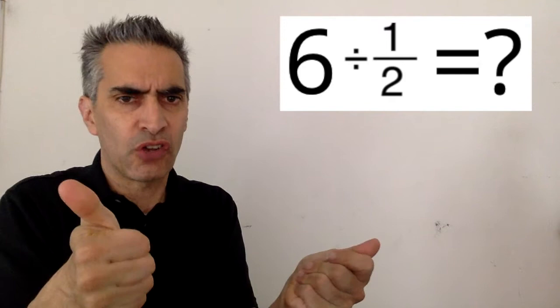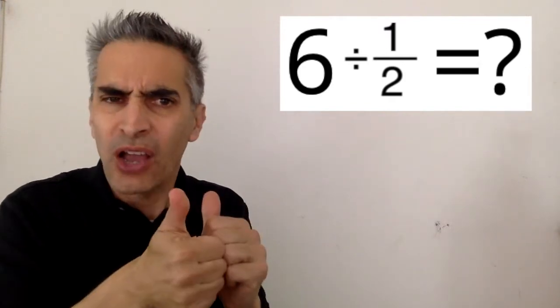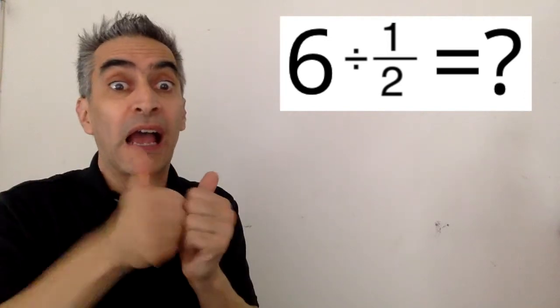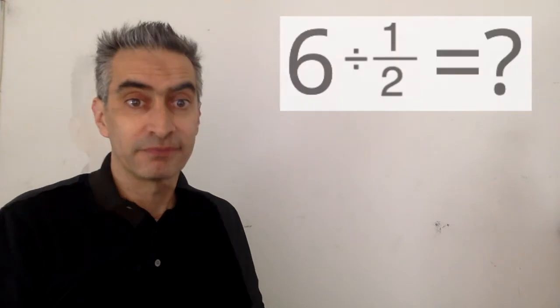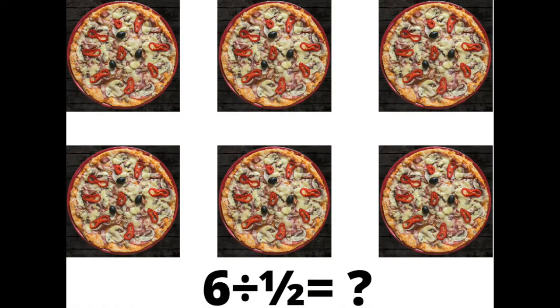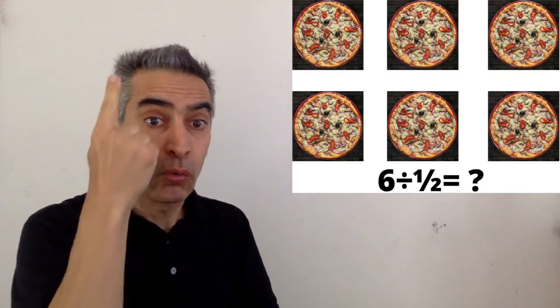Now, we're going to solve the same problem using the second way. It'll help you better understand how to divide. Suppose we have six pizzas. Our problem is six divided by one half. This six represents all six pizzas. This divided by one half means each pizza we're going to have to split in half.